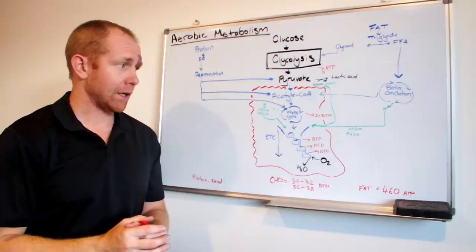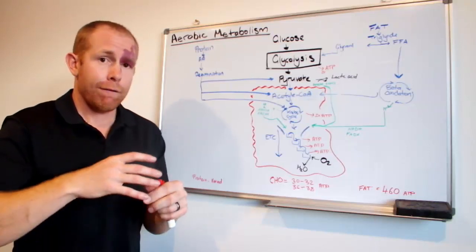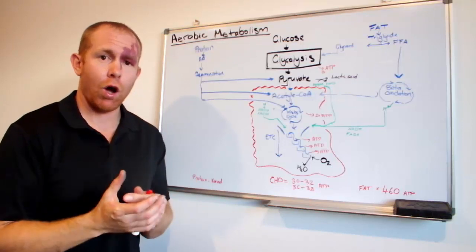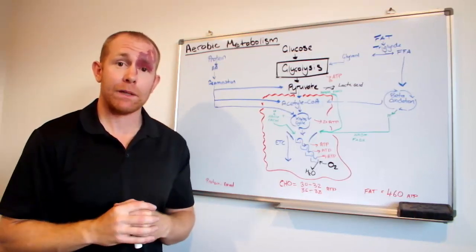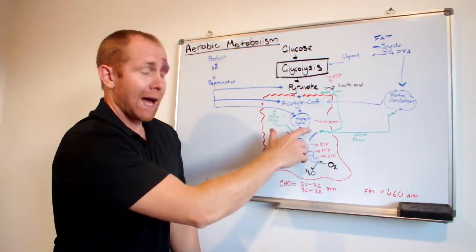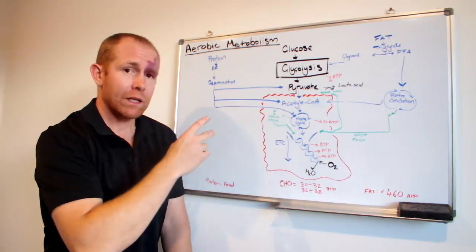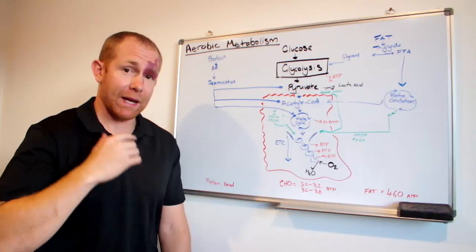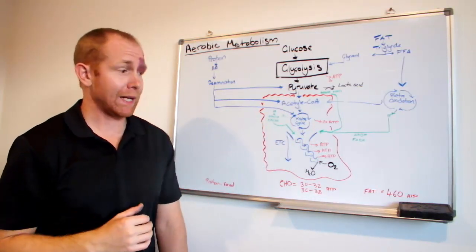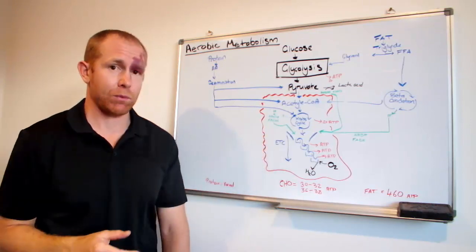The main aim of the Krebs cycle is to further break down acetyl-CoA and to produce hydrogen ions. And they're going to be used later in the electron transport chain. Out of the Krebs cycle, only two ATP are actually made. Not many for all the things that happen in here. But the magic really happens down here in the electron transport chain.